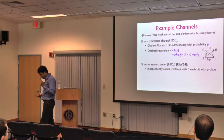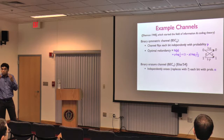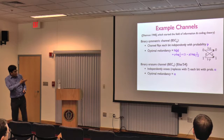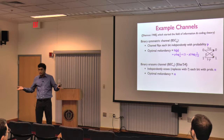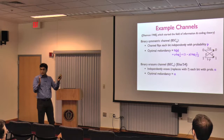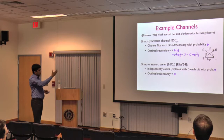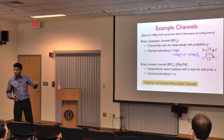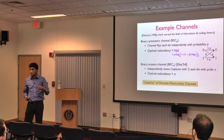Another channel is the erasure channel, where bits never get flipped but with probability alpha a bit goes missing — replaced with a question mark. The optimal redundancy here is alpha, which is intuitive: in a long string of n bits, about an alpha fraction will go missing, so you can't send information at rate more than 1 minus alpha. For discrete memoryless channels in Shannon's model, Shannon gave a formula for the best redundancy for all of them.